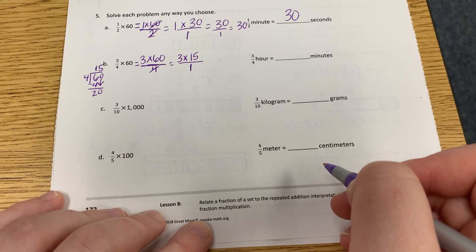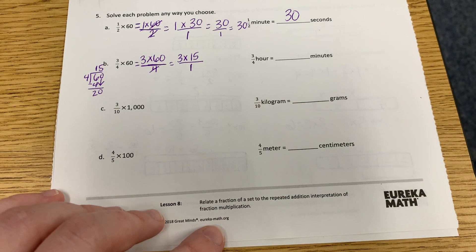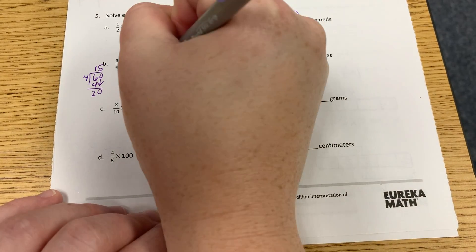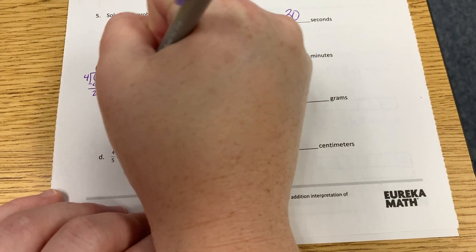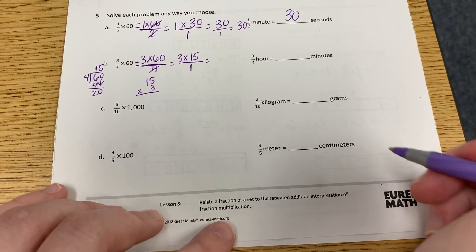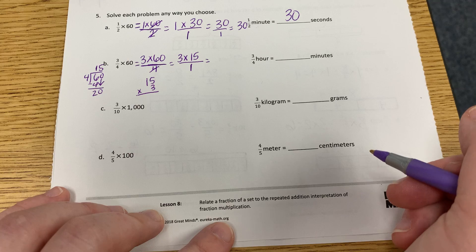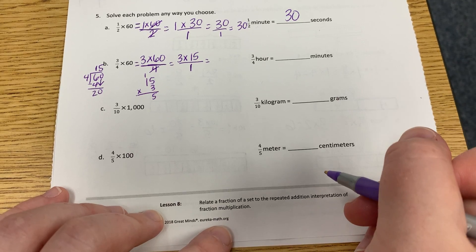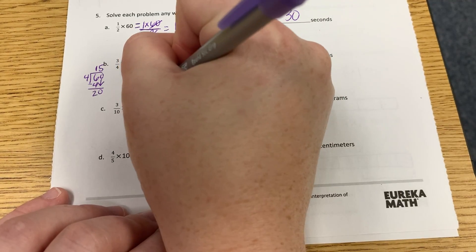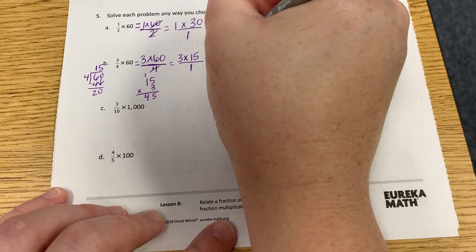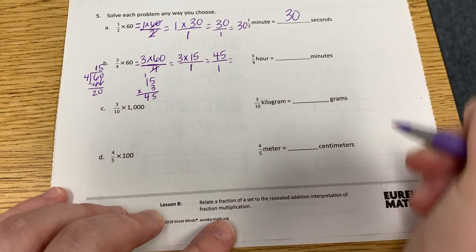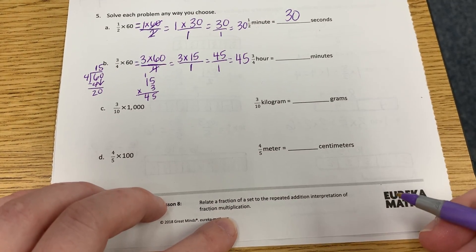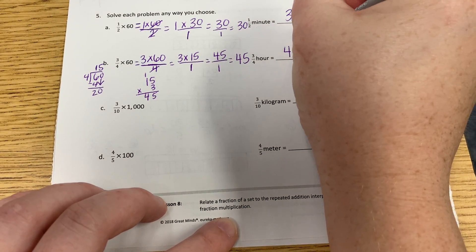Okay, now we have three times 15. Anybody know? Three times 15? If we don't know it, come down here and do your multiplication. Five times three is 15. So I'm going to write my five, carry my one. Three times one is plus one more is four. So what is three times 15? 45. And we have a denominator of one. And 45 over one is the same thing as? 45. So three fourths of an hour is how many minutes? 45 minutes. Very good.